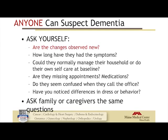Anyone can suspect dementia. Things to ask: Are the changes new? If new, when — last couple of weeks, months, years? What is their functional baseline — how are they managing their household, finances, self-care? What objective data backs up suspicions? Are they missing appointments? Has the pharmacy not refilled their medications in six months? Are they confused when they call the office? Are there multiple no-shows? Do staff notice differences in dress or behavior? Have a relationship with your staff so they feel comfortable letting you know these things.